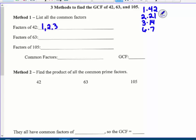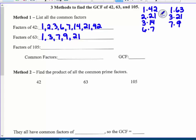1, 2, 3, 6, 7, 14, 21, and 42. The factors of 63. 1 and 63. 2 does not go in. 3 times 21. 4 doesn't. 5 doesn't. 6. 7 times 9. And that's it. So 1, 3, 7, 9, 21, and 63.